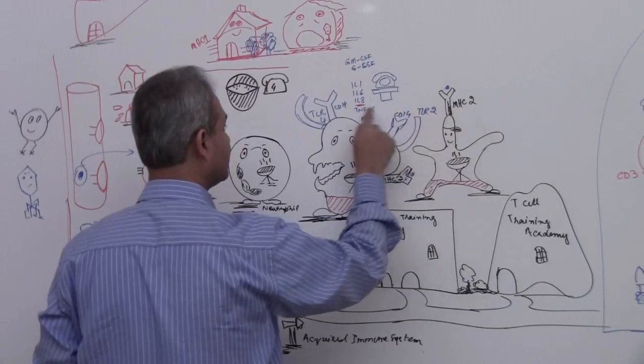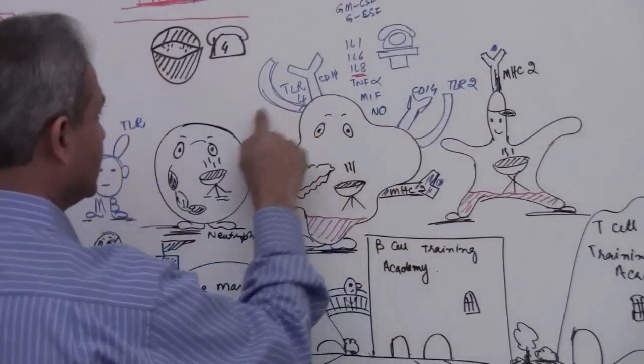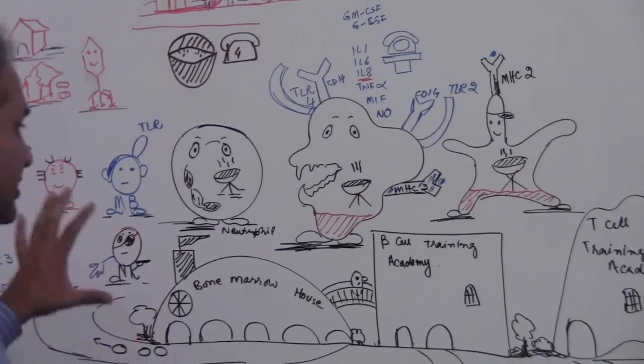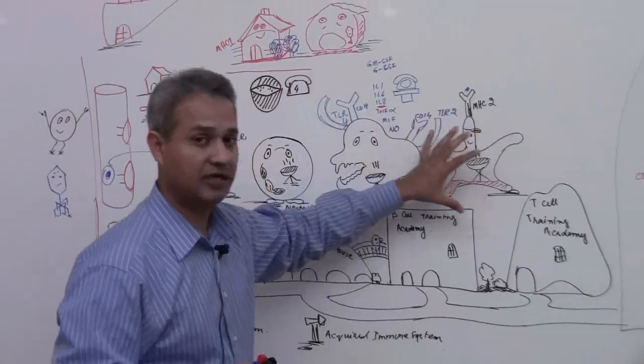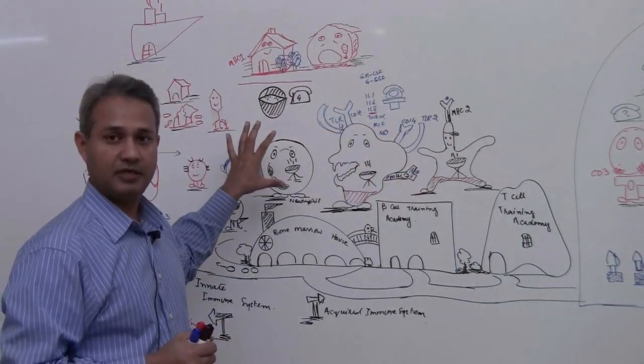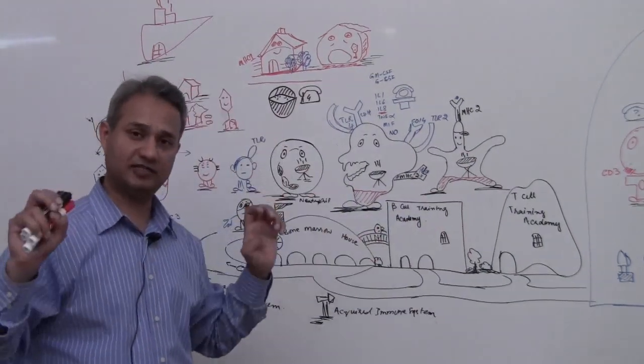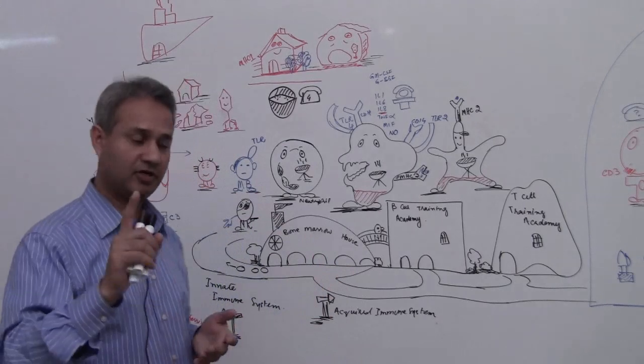Do you see those little things over here? We will talk about those in a second. These are the MHC complexes but anyways, this is the innate system. Now before we talk more about the trained system or acquired system, I want to talk one more thing.